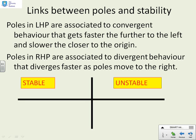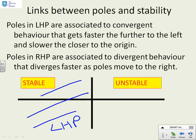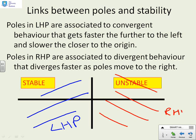First, links between poles and stability. This slide makes the simple observation that if the poles are in the left half plane — here's the left half plane — then the associated behaviour is convergent or stable. And if the poles are in the right half plane, then the associated behaviour is unstable. The other key point is the further you move from the imaginary axis, the faster the behaviour.